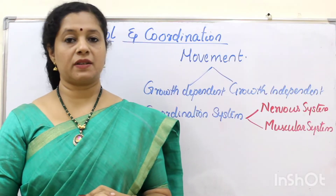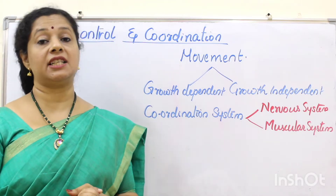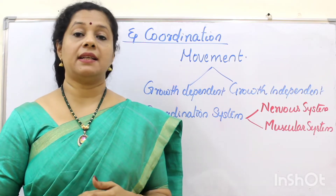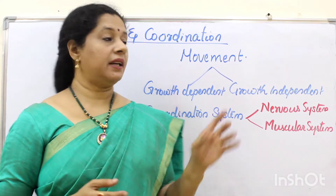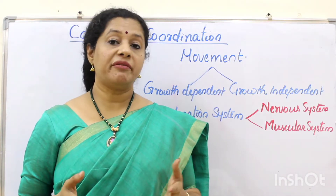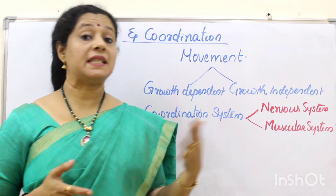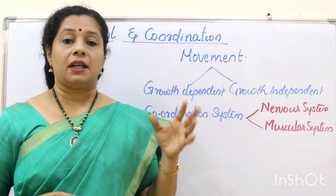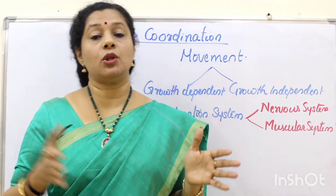In the life process chapter, we learned about many life processes required for maintenance of life. But we also know that living organisms exhibit a few characteristics. Movement is one among them. We know living organisms move, but this movement is different in different types of organisms. Especially if you see plants and animals, there is a huge difference in their movement.